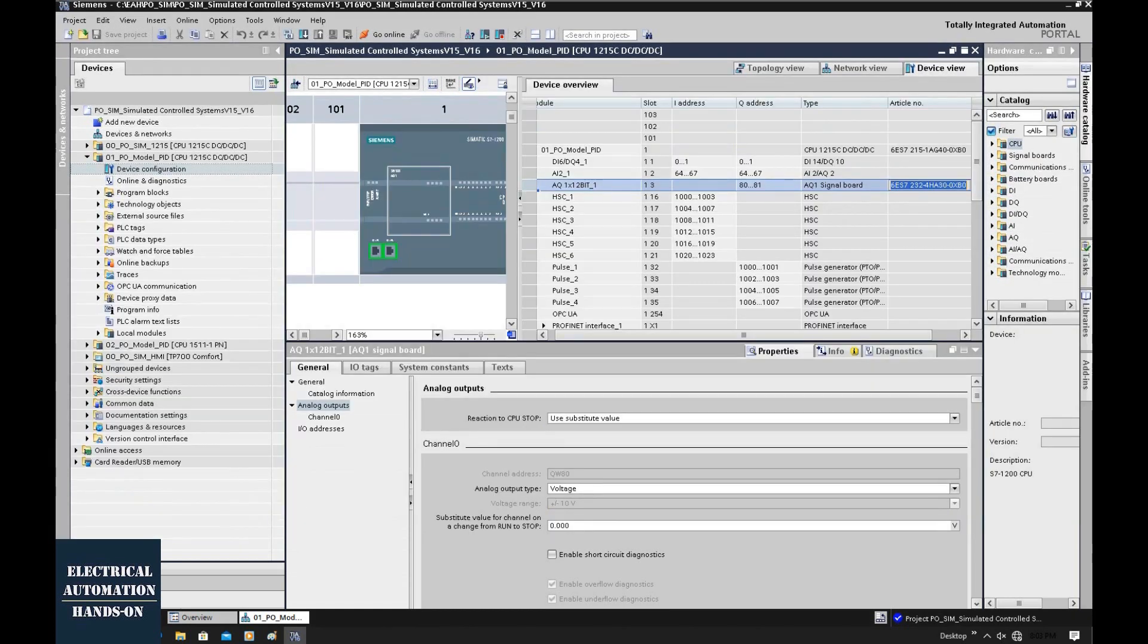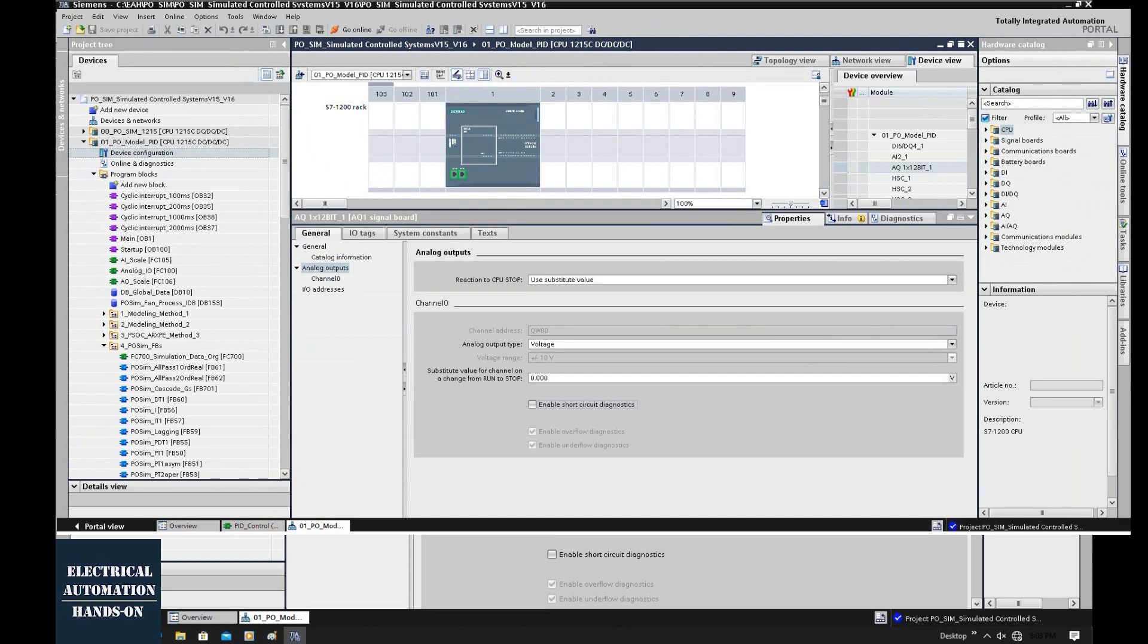Because my system uses 0 to 10 volt analog input and output, I configured one additional signal board. This signal board can be configured for current or switched to voltage output.